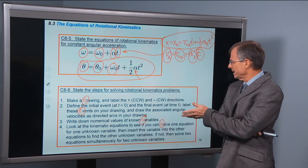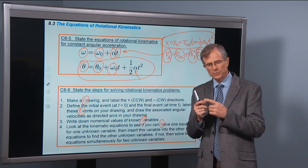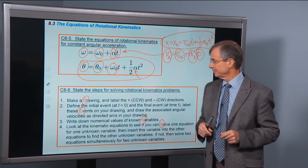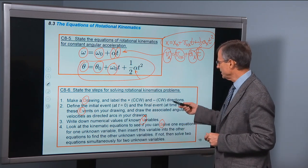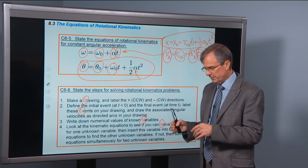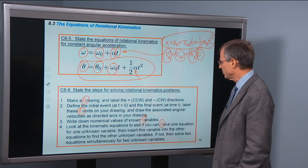Define the initial event and the final event, two different things that happen to the same rotating object at two different times. Those are the events. You have to say the wheel started up or the wheel began to slow down, something like that, some event. Label the events in your drawing.